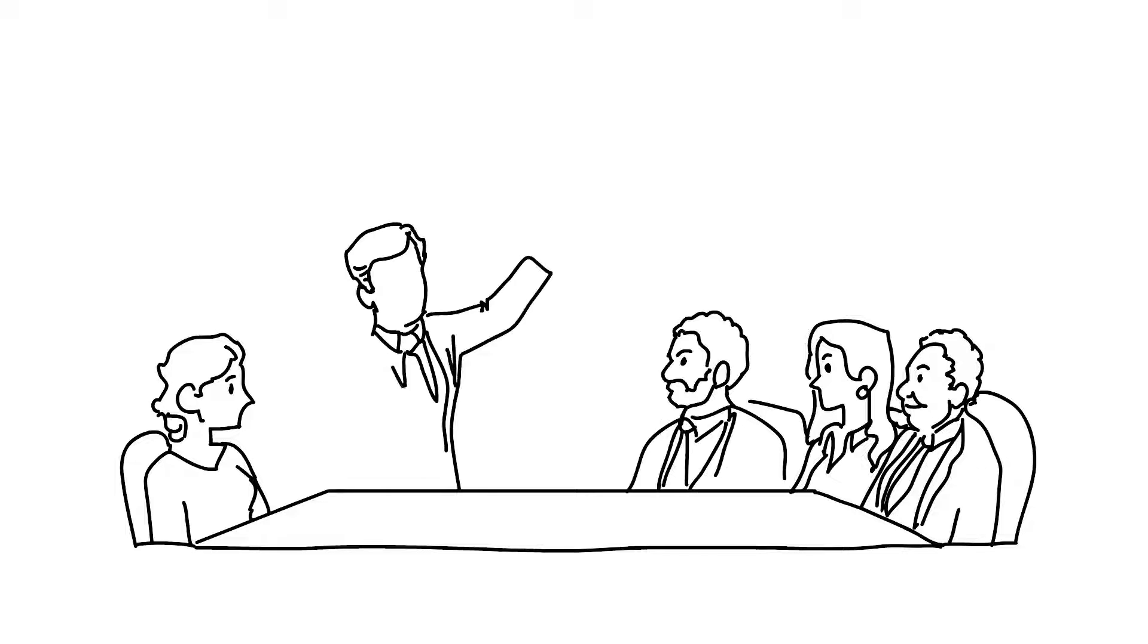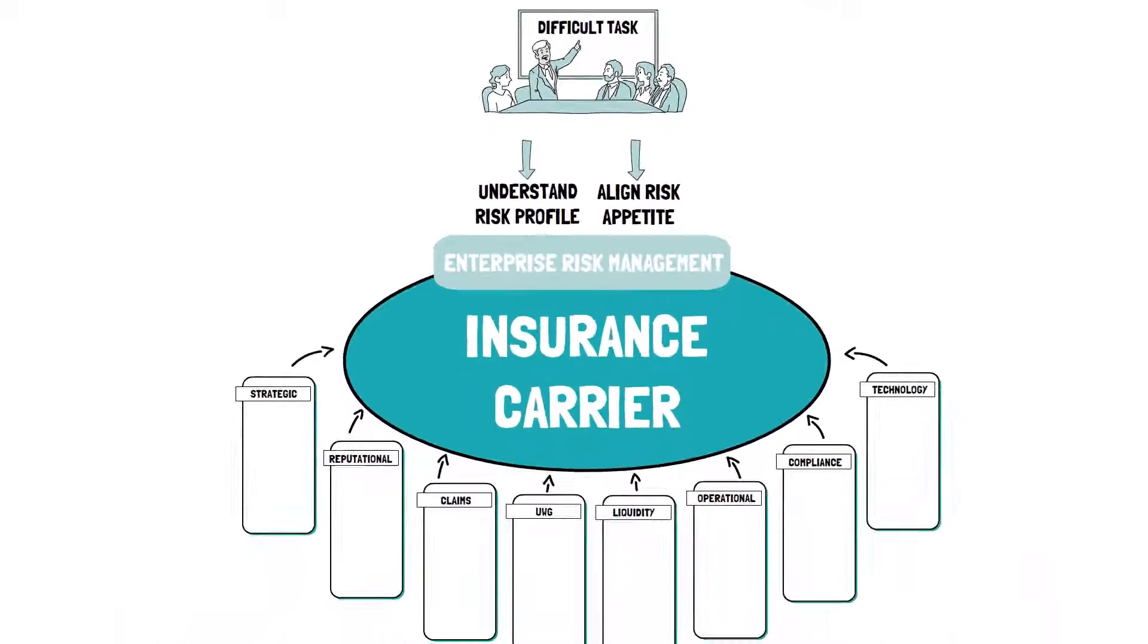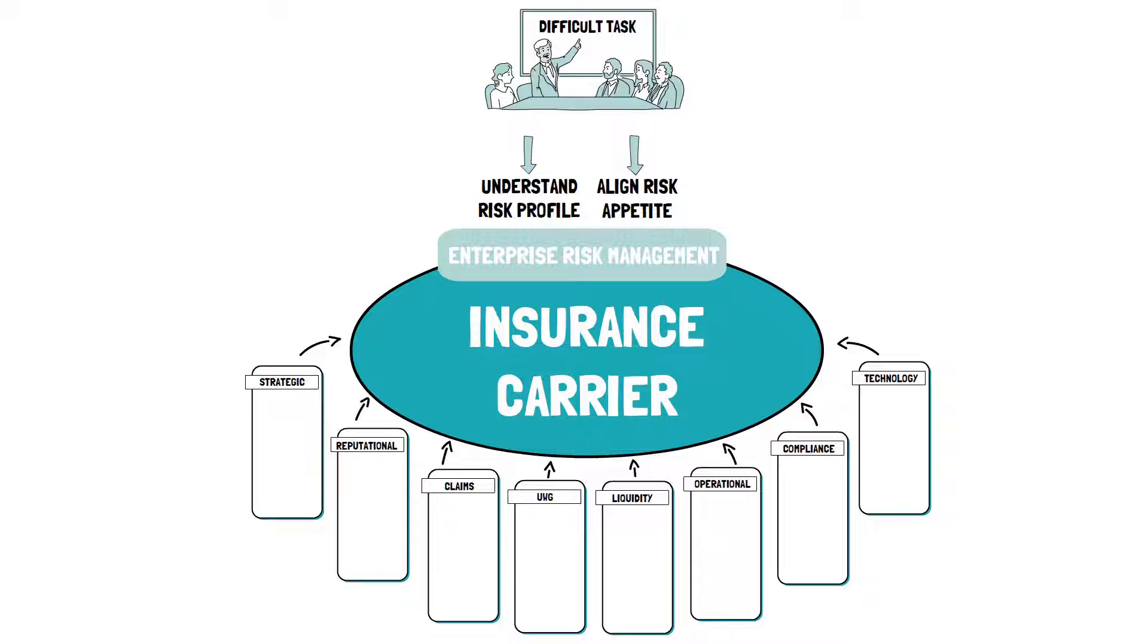As an executive at a property and casualty insurance company, you're faced with a difficult task. It's your responsibility to understand your risk profile and align your risk appetite to strategic imperatives.